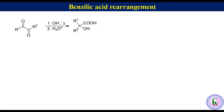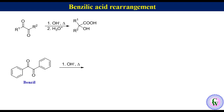It is called benzylic acid rearrangement because it was first observed by Justice von Liebig in 1838 — that treating 1,2-diphenylethane-1,2-dione, also called benzyl, with hydroxide gave, after acidic workup, 2-hydroxy-2,2-diphenylacetic acid, which is also called benzylic acid.